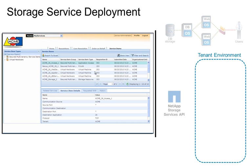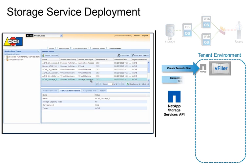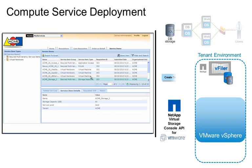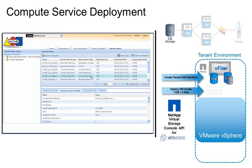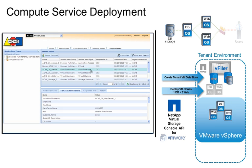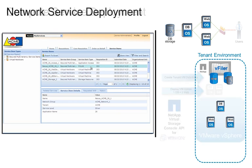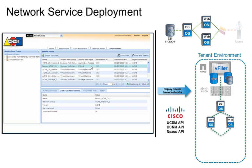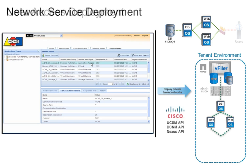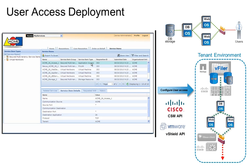Here, she sees the storage service, which was provisioned seamlessly through NetApp Storage Services Automation. And here, she sees the virtual machines that were provisioned through the NetApp Virtual Storage Console Automation for VMware vSphere. Over here, she sees the network services provisioned through Cisco Data Center Network Manager and Nexus Automation. And lastly, she can see the user access configuration provisioned through vSphere vShield and Cisco Service Automation.